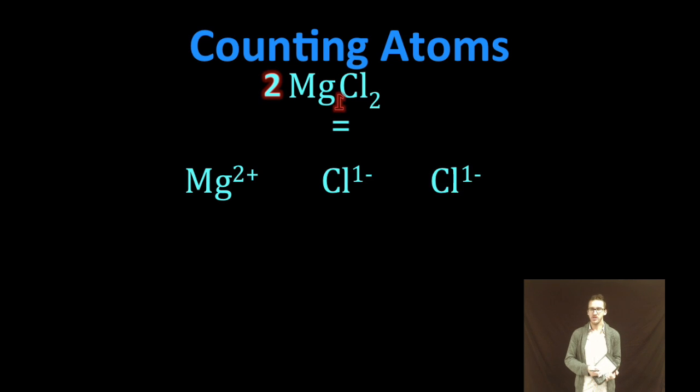remember that if we had just one formula unit, it was one magnesium ion and two chloride ions. Two formula units of magnesium chloride mean we're going to have a total of two magnesium ions and four chloride ions. Essentially double what we had without that coefficient of two.